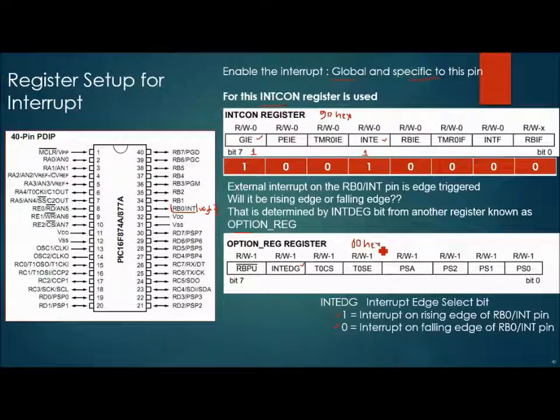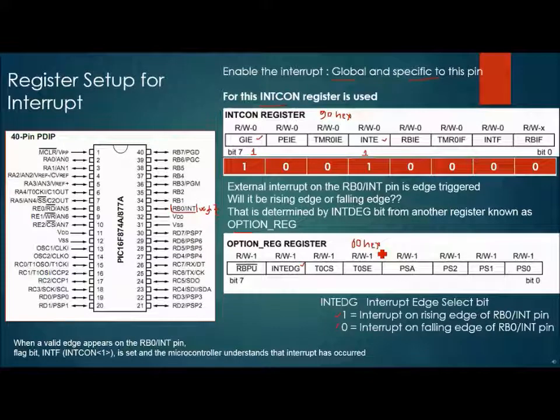Now we are all set. When a valid edge will occur at RB0 or INT pin that will be considered as the interrupt. And the flag bit INTF of INTCON register will get set on its own. User has to do nothing, it will get set on its own and with this the microcontroller will understand that the interrupt has occurred at RB0 pin.